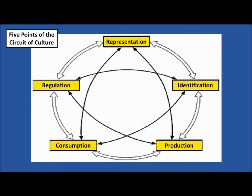It may be known as the circle of culture as well as the circuit of culture. It has five components: regulations, representation, identification, production, and consumption. Let me very quickly go over the five aspects of the circuit of culture.